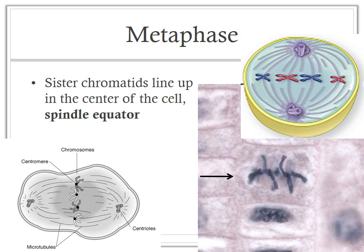In metaphase, the sister chromatids line up along the center of the cell at the spindle equator. The spindles attached during prometaphase are used to position each chromosome. In a human cell, all 46 chromosomes line up along this equator — a remarkable feat for such a small cell.